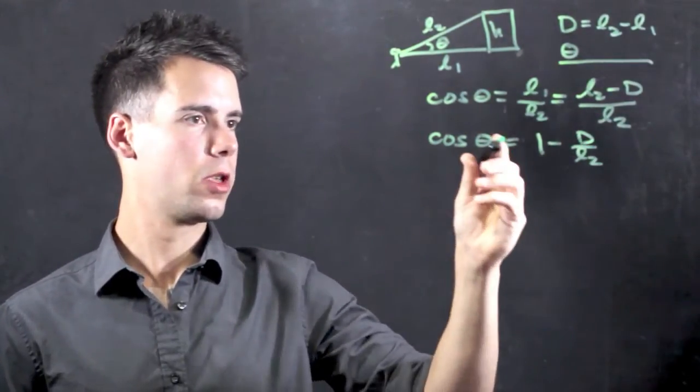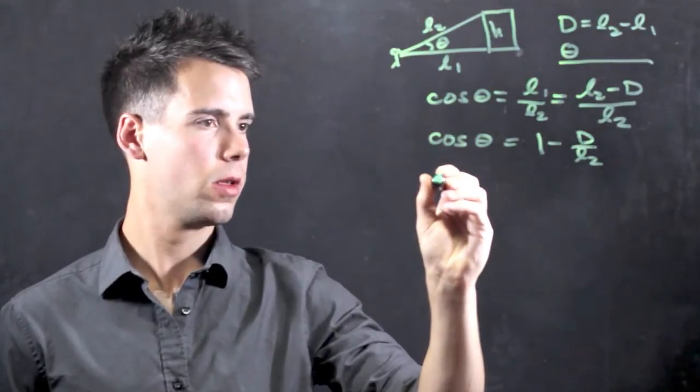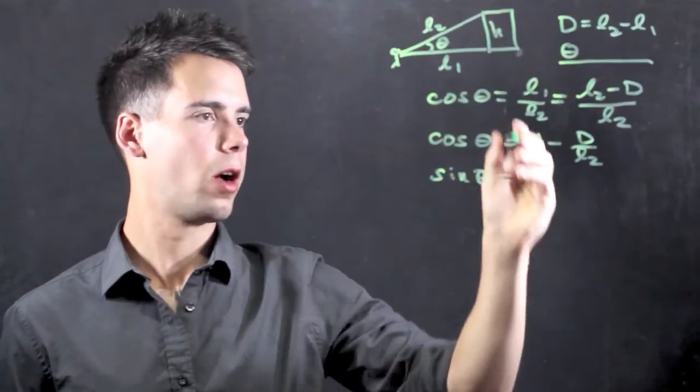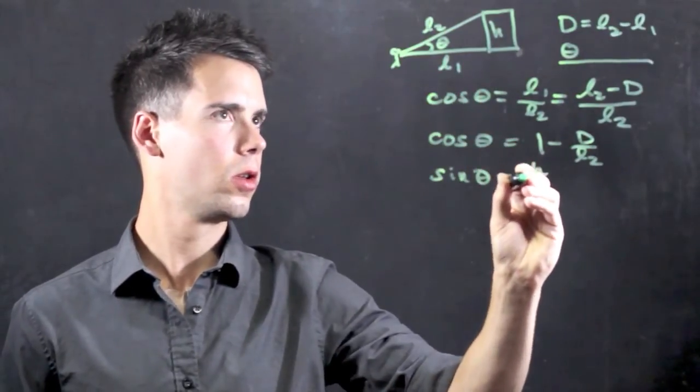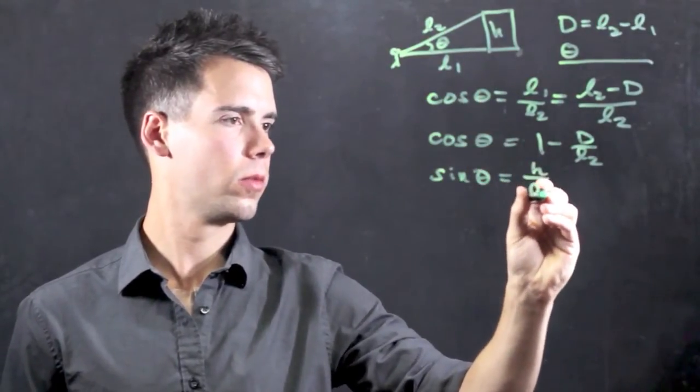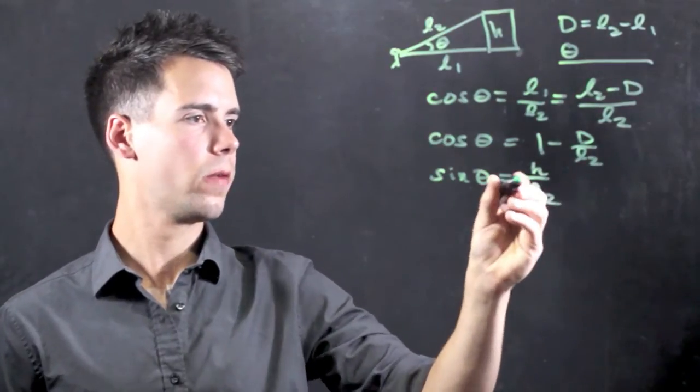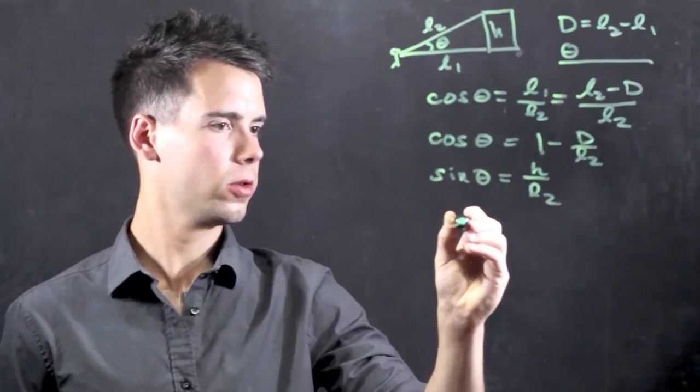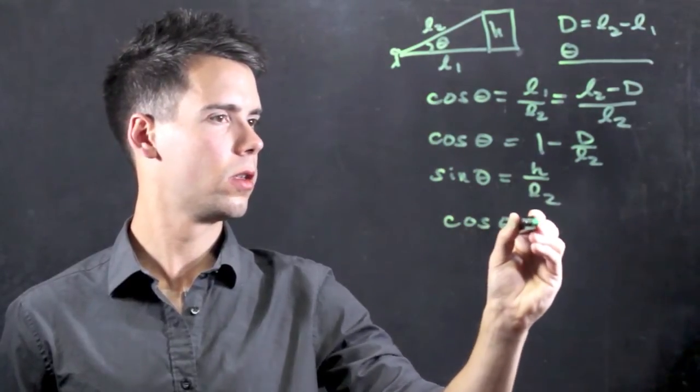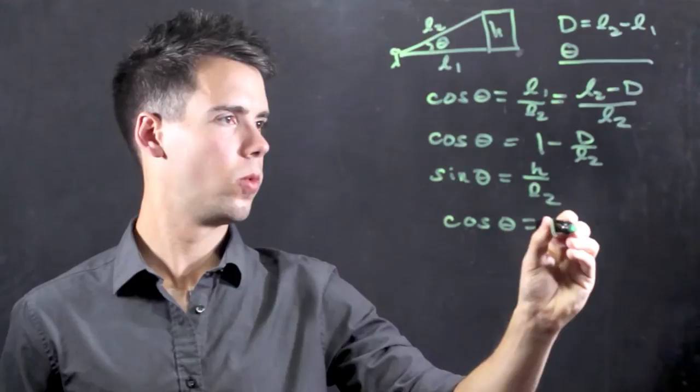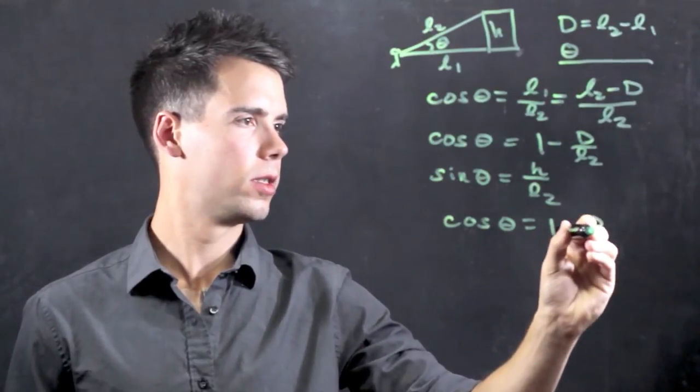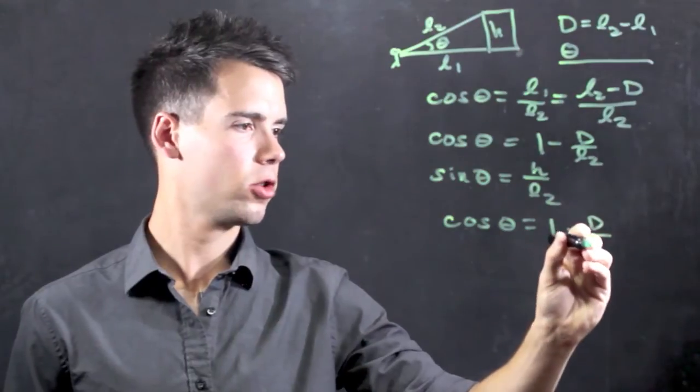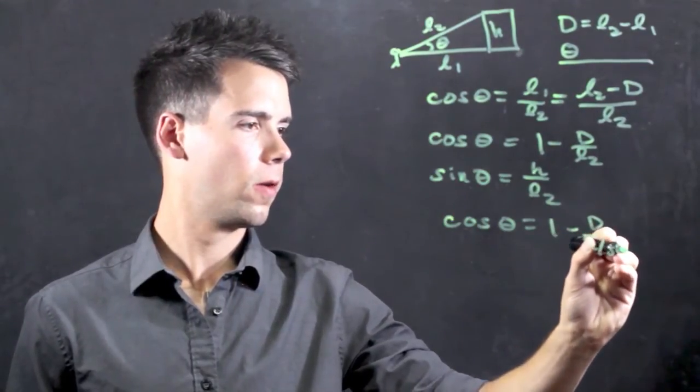Okay, now we can use another trigonometric equation. Sine of theta is equal to opposite over hypotenuse, which is H over L2. So if we solve for L2 in this equation and substitute here, we find that cosine of theta is equal to 1 minus d over L2, which is simply H over sine theta.